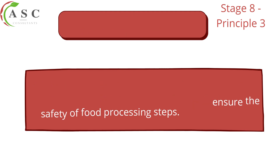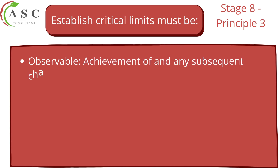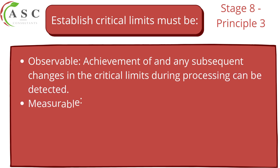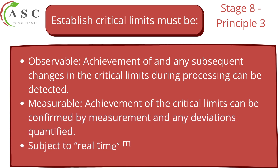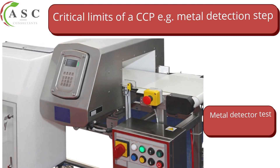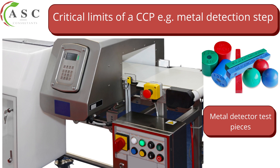Once you've identified the value or parameter, you ensure all measures are taken so your process reaches that value. If the process is over or under that value, your critical limits have not been reached and your product may be unsafe to sell to consumers. Your critical limits must be observable, measurable, and subject to real-time monitoring. For example, a metal detector's critical limit for non-ferrous metals is 1.5 millimeters — any metal above that size would be unsafe for the consumer.